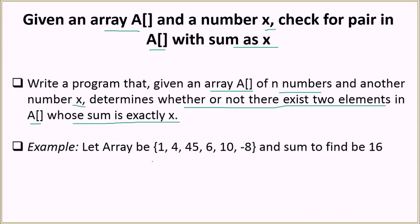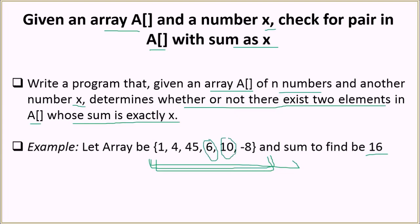Let us understand it with an example. We are given this array and the value of X is 16. We have to find two elements in this array whose sum is exactly equal to 16. So 6 plus 10 — 6 and 10 are the two elements whose sum equals 16, so our output should be these two numbers.